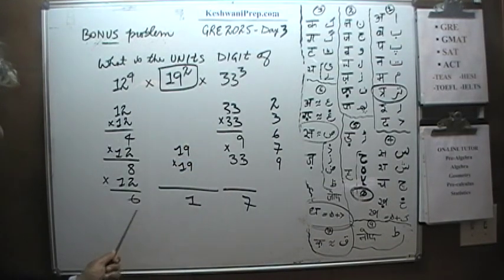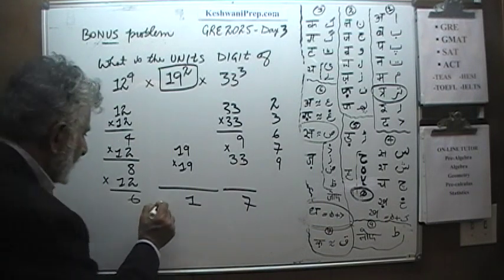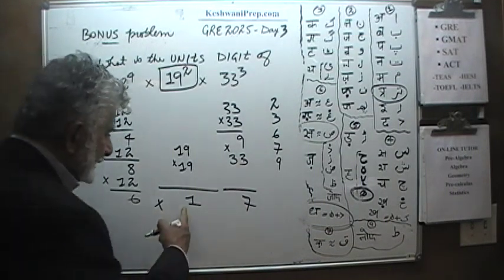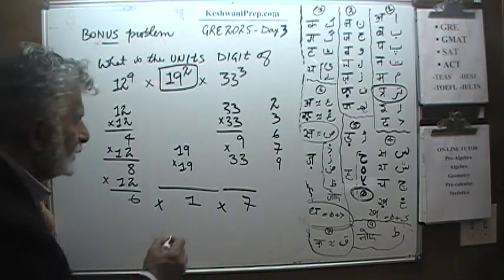Now we have to multiply these three quantities. It's just 6 times 1 is 6. 6 times 7 is 42. It ends in 2.